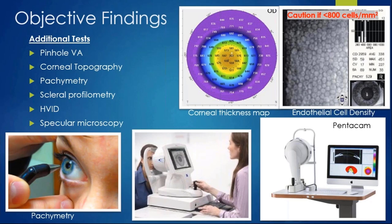After regular prelims, you'll do several extra tests. Corneal topography is huge, along with symmetry measurements. Some topographers measure both along with the HVID, so measure that manually or through your instrument. Many practices now use scleral profilometry to look not just at corneal irregularities but at the sclera as well. For transplant patients, pay special attention to endothelial cell density via specular microscopy—use caution if they're under 800 cells.